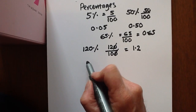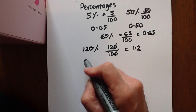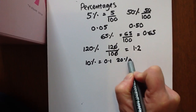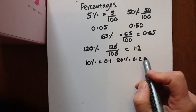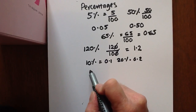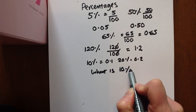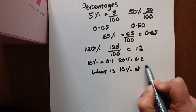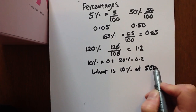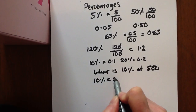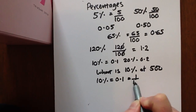It's also handy to know that 10% is 0.1, 20% is 0.2, and so on. Suppose we're asked: what is 10% of 500? As 10% equals 0.1, which is 1 tenth, we need to find 1 tenth of 500.